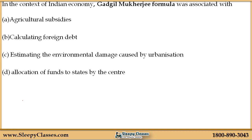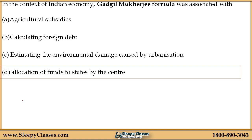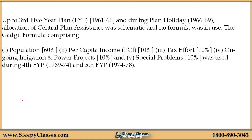The right option is D — allocation of funds to states by the center. Up to the third five-year plan, which was until 1961 to 1966, and during the plan holiday, the central plan assistance was schematic and no formula was used. If you don't know about this, it is covered in our lectures. Even in paid modules, five-year plans are focused on more. State PCS has a special favorite for five-year plans.